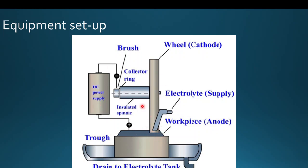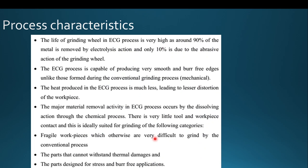A notable point is that 90% of material removal occurs due to the electrochemical machining concept, not abrasive action as in conventional grinding. Because the abrasive particles in the wheel do very little cutting, the tool life of the grinding wheel is very high compared to conventional grinding.